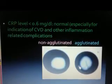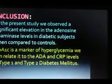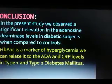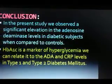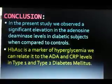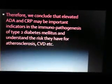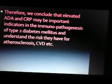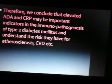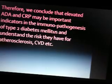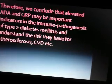In the present study, we observed a significant elevation in the adenosine deaminase level in diabetic subjects when compared to controls. HbA1c is a marker of hyperglycemia, and we can relate it to ADA and CRP levels in type 1 and type 2 diabetes mellitus. Therefore, we conclude that elevated ADA and CRP may be important indicators in the immunopathogenesis of type 2 diabetes mellitus, helping to understand the risk patients have for cardiovascular diseases and other immunological disorders.